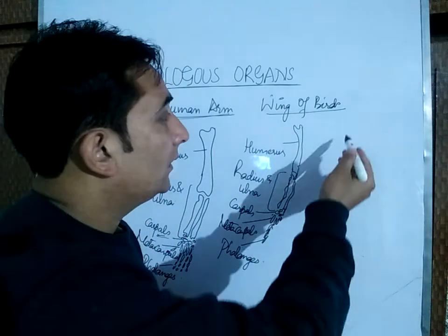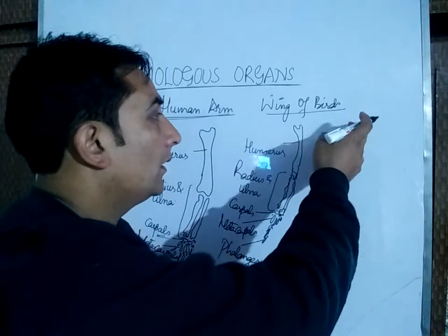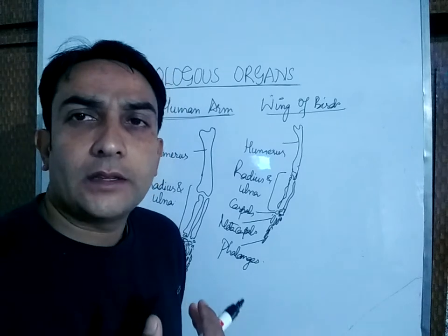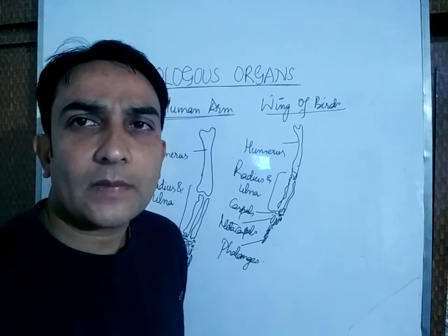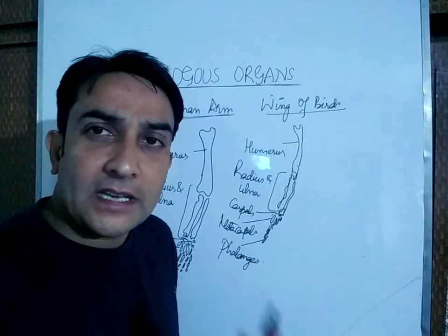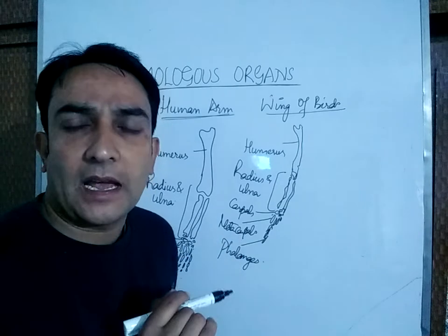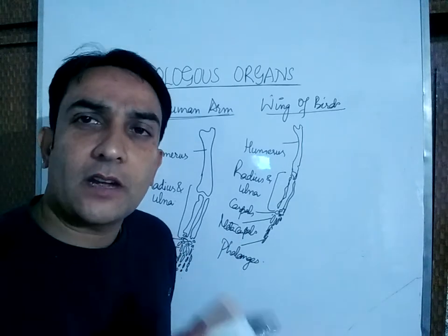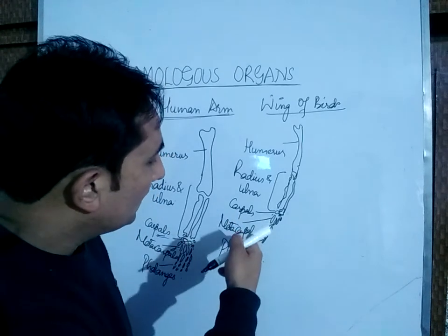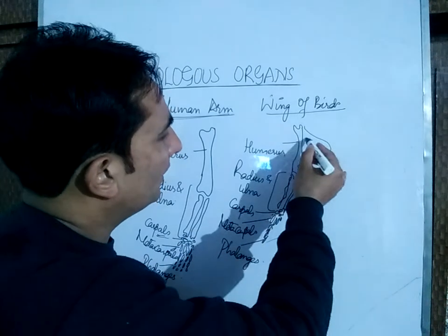We can also draw the flipper of the whale over here. We can also draw the four legs of all the mammals — they have the same basic structural plan. We say these organs do have the same structural and basic plan, but their functions are different. These bones are present in the wing of the bird.